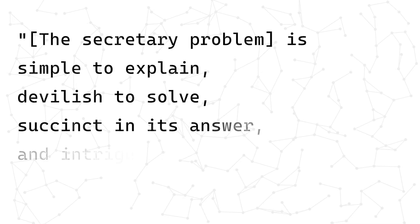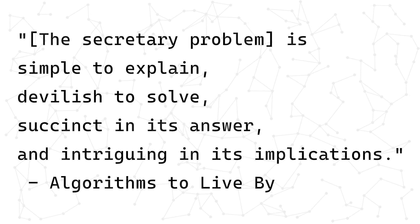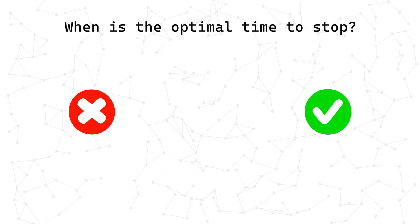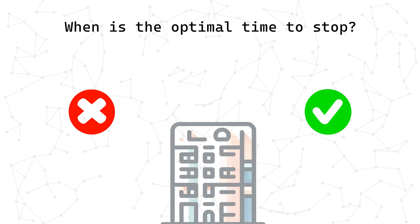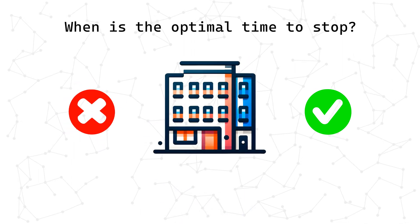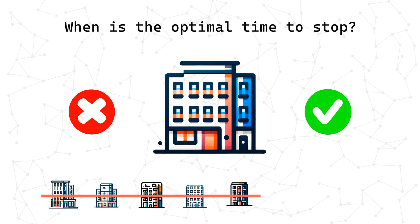On the secretary problem, the book says it's simple to explain, devilish to solve, succinct in its answer, and intriguing in its implications. So let's dive in. For today's problem setup, let's say we're in San Francisco looking for an apartment to live in. For each one that we tour, we must decide whether to take the apartment or wait for a potentially better one. The twist? Once we pass on an apartment, we can't go back to it — presumably because someone will snatch it up right after you. So the goal is to maximize your chances of picking the best apartment, but how can we do that without seeing all the options first?